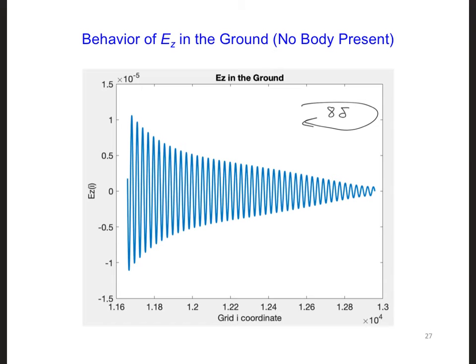Here's a plot of EZ only in the ground region of the model. So here on the right is I equal I max, and on the left side of this plot corresponds to the ground surface.